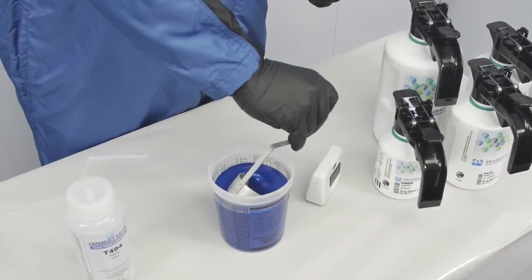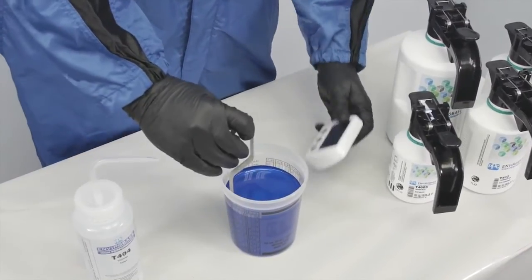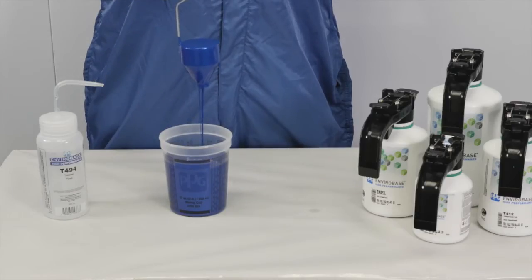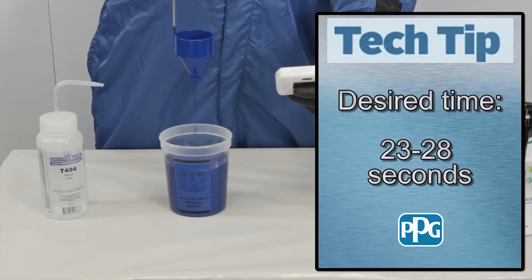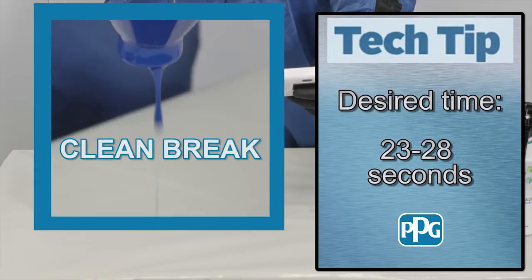Fully submerge the viscosity cup below the surface of the reduced color. Lift the cup completely out of the paint and start the stopwatch. Watch the stream below the cup. When it first breaks, immediately stop the watch. The paint will continue to drip, which is normal.